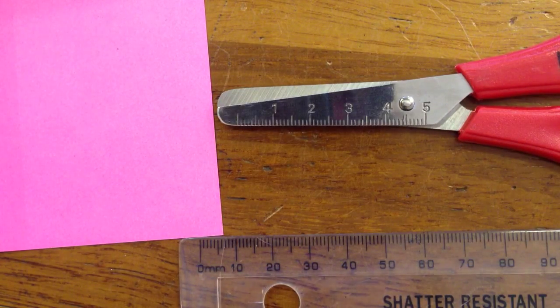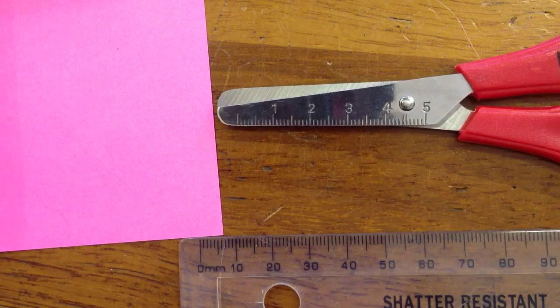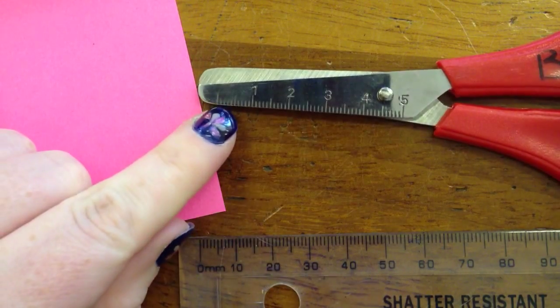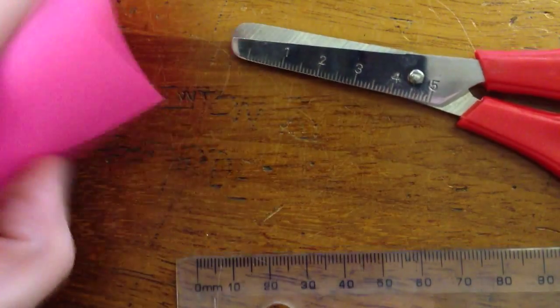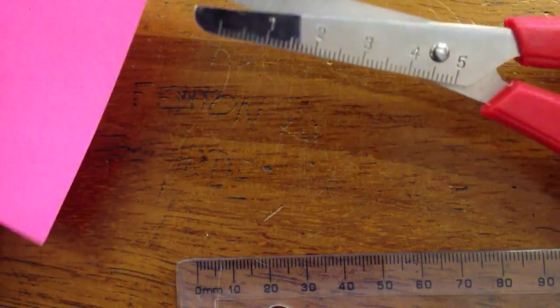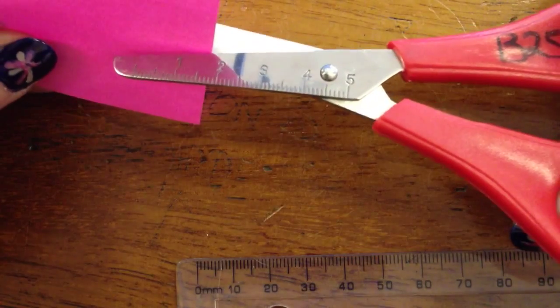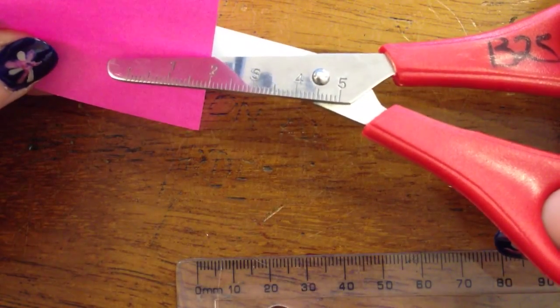I was looking at these scissors on my desk and they're a really good way to show an error. If you notice, they have a ruler on them which goes up to 5cm, and what a student could do is decide that they want to cut 2cm.